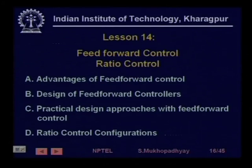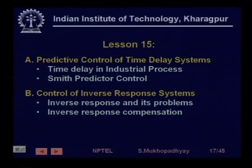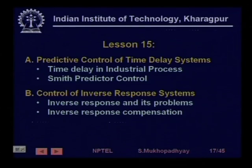After PID controller tuning, we took a look at various different control structures which give great advantages in certain very common industrial situations. We started with feedforward and ratio control. Feedforward control can give very good performance in the face of measurable disturbances. We also looked at ratio control, which is a kind of feedforward control. Then we took a look at typical techniques to control process time delays, which are very common because of material flow times in process systems, and also non-minimum phase systems — for example, in drum level control.